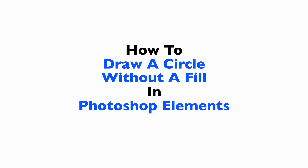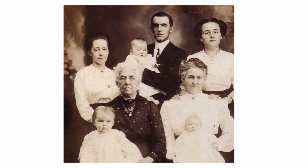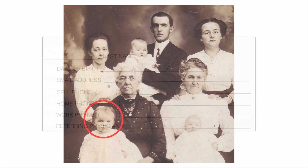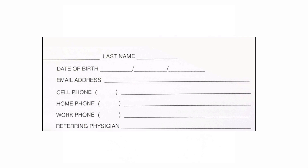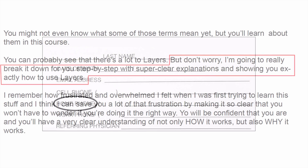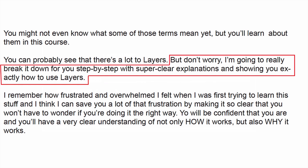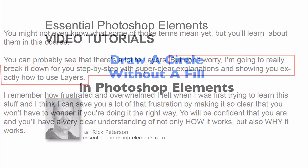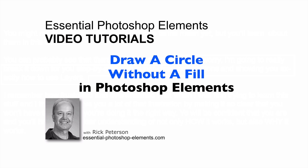In this video we're going to see how to draw a circle without a fill in Photoshop Elements. We'll see how to draw a circle around someone in a group shot to identify them. You might also use this technique to indicate exactly which information is needed on a form or to highlight a block of text. Hi, this is Rick from EssentialPhotoshopElements.com. Let's go over to Elements and get started.